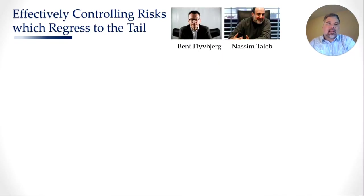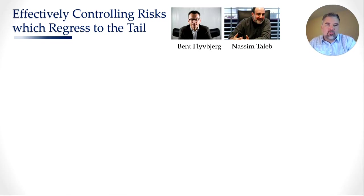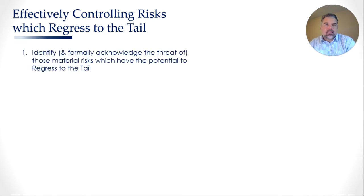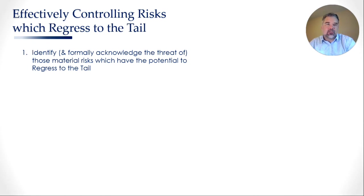Right about now is a good time to start talking about how we effectively control risks which regress to the tail. Drawing from Ben Flyberg and Nassim Taleb, our mentors on this topic, the first step they commonly advocate is that we need to identify and formally acknowledge the threat of those material risks which have the potential to regress to the tail. The reason 'acknowledge' is emphasized is because if you look at coronavirus specifically, we had known for the longest time that a coronavirus-like pandemic was coming, but we just didn't acknowledge the threat.